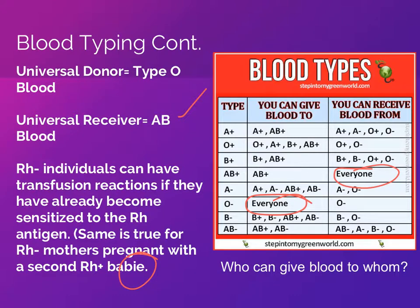Rh-negative mothers can have problems if they have an Rh-positive baby, because they can make antibodies against the baby's Rh-positive blood — causing hemolytic disease of the newborn. The same is true with transfusion: a person can become sensitized after exposure to Rh-positive blood, and the second time an Rh-negative person receives Rh-positive blood, they would have a transfusion reaction.